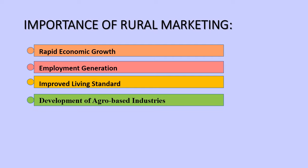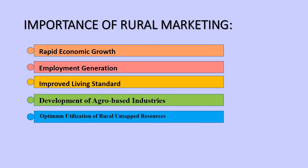Next is development of agro-based industries. Development of allied agriculture industries is supported through rural marketing, such as fruits, vegetables, cereals, pulses etc., which are raw materials for food processing and other industries. Next is optimum utilization of rural untapped resources. There are limitless business opportunities in rural areas and many resources which are untapped, and their utilization will accelerate overall economic growth.